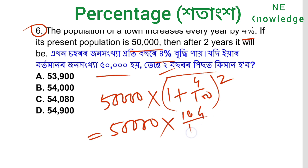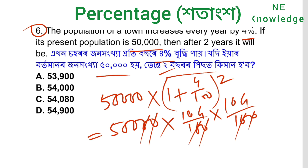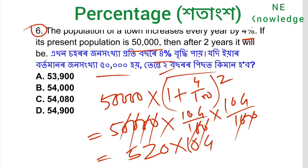That gives us 4 by 100, so the formula becomes 50,000 into (104/100) squared, which equals 50,000 into 1.04 into 1.04. The answer is 54,080. The correct option is number C.